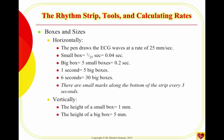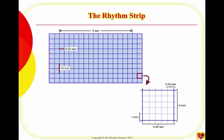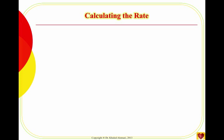Each five vertical small boxes equal five millivolts. Here's the ECG paper again — this is the small box. Horizontally, each small box is 0.04 seconds, each big box is 0.2 seconds, each 10 big boxes is two seconds, and 30 big boxes is six seconds. Vertically, each small box is one millimeter or one millivolt, so five small boxes equal five millimeters.